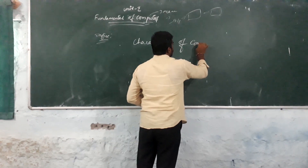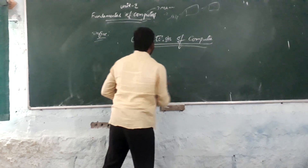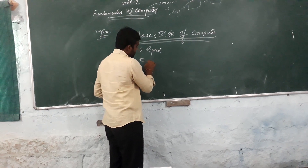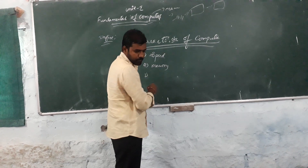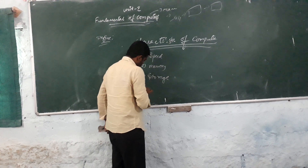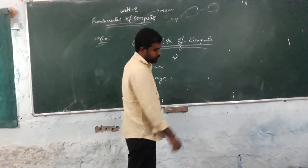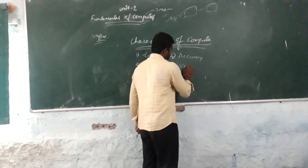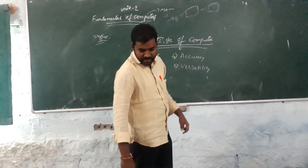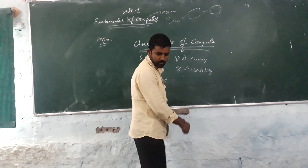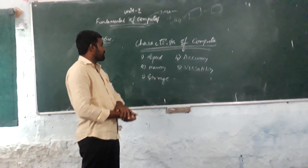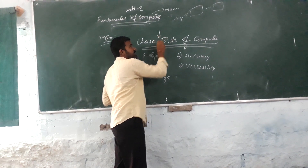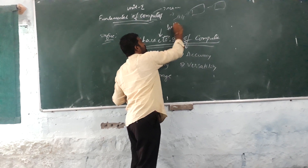Characteristics of a computer. The characteristics are: speed, memory, storage, accuracy, and versatility. The characteristics of computers is another name for the features of a computer. Before buying any kind of computer, we need to look at the features of the device. In the same way, we need to know the characteristics of computers in computer science.